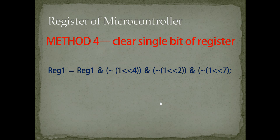Similarly, multiple clear operations can be performed: reg1 = reg1 & ~(1<<4) & ~(1<<2) & ~(1<<7). To summarize: Method 1 writes values to individual bits; Method 2 writes one full byte to the register; Method 3 sets a particular bit leaving all other bits undisturbed; and Method 4 clears a single bit without disturbing the other bits. I hope you understood all the contents. See you in the next lecture, thanks for watching.